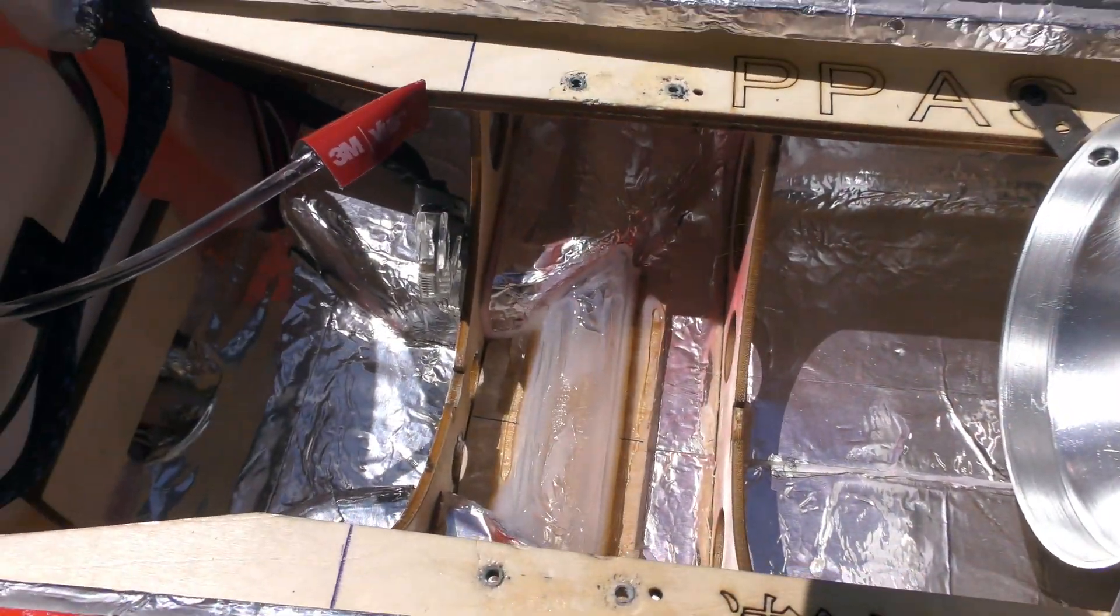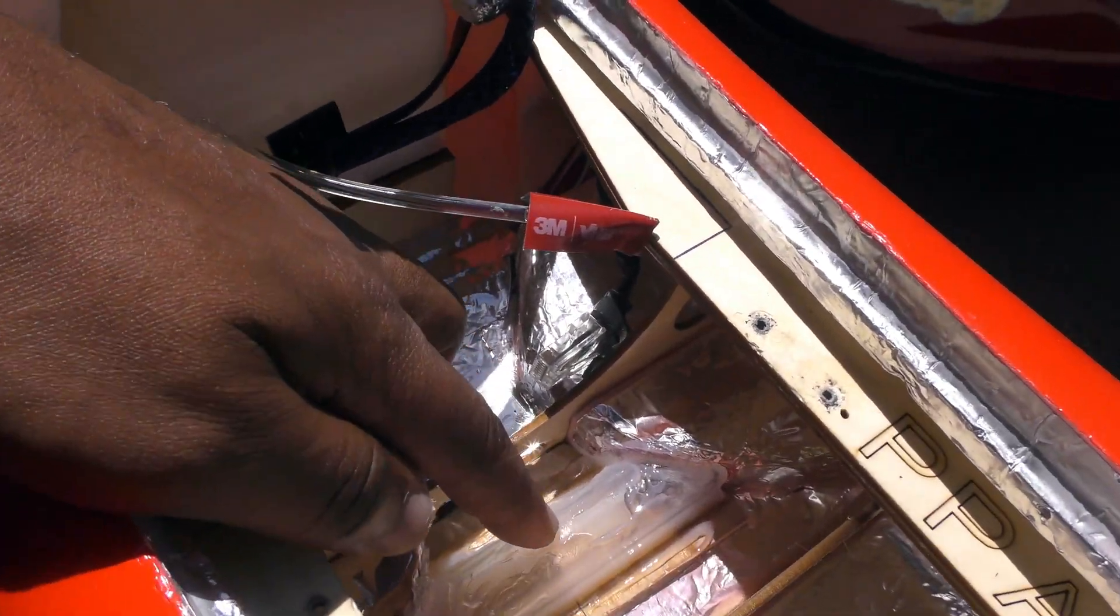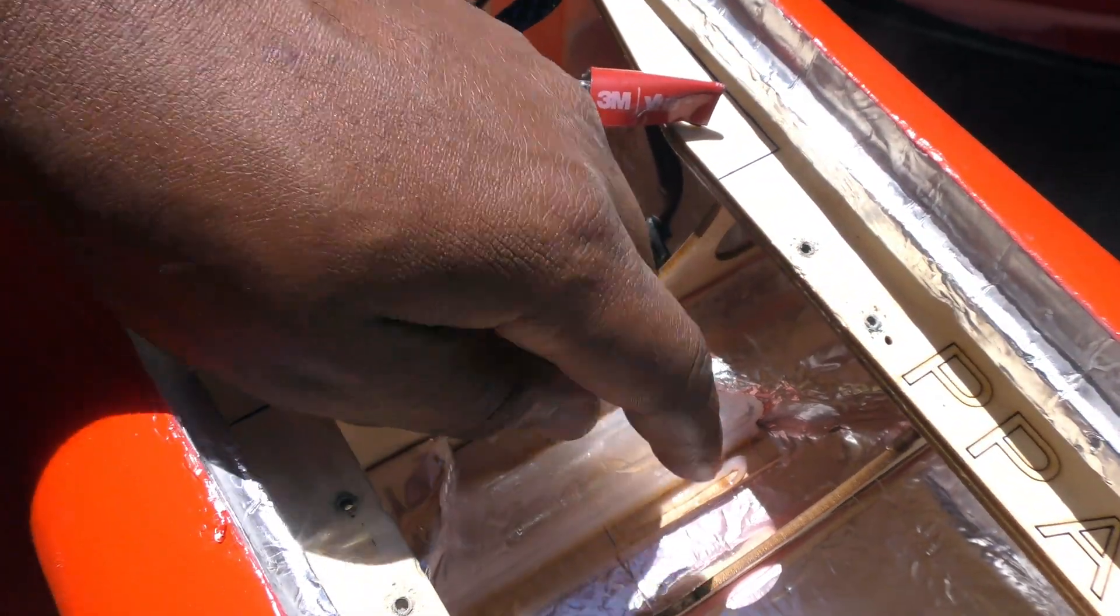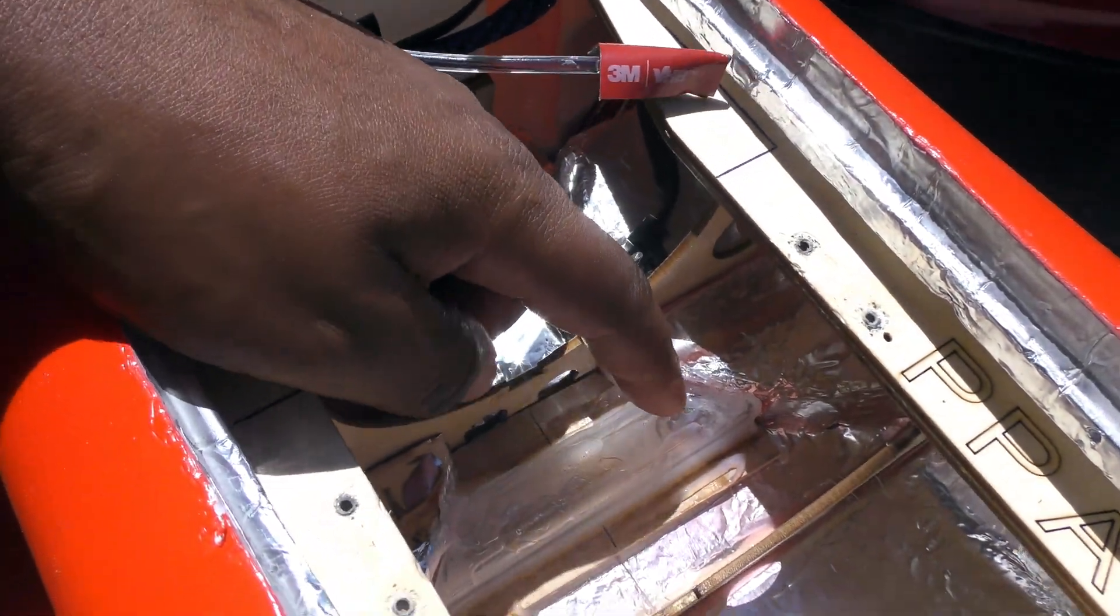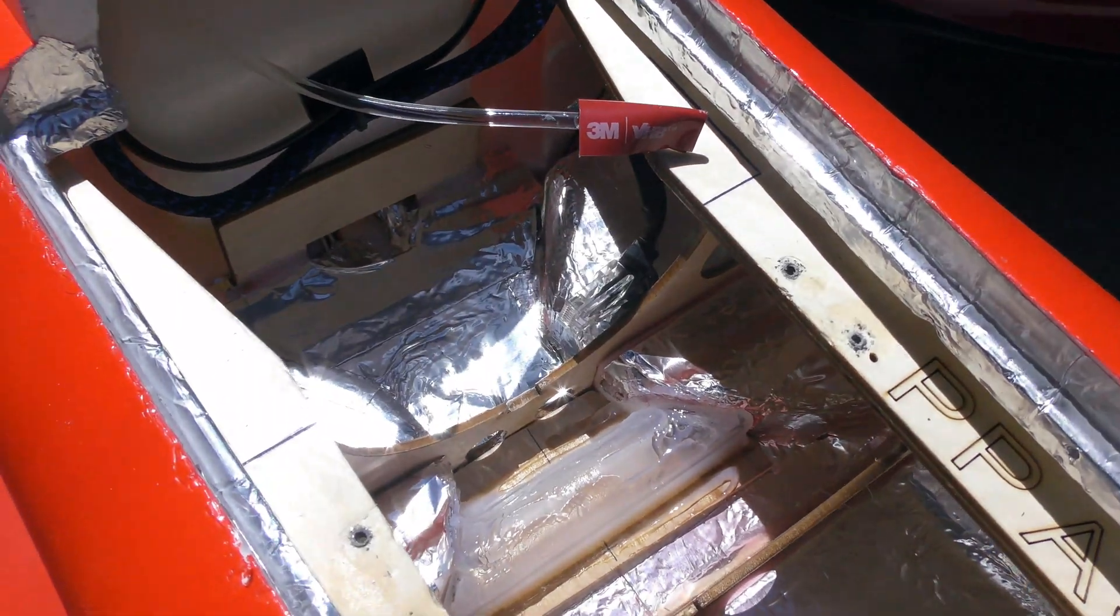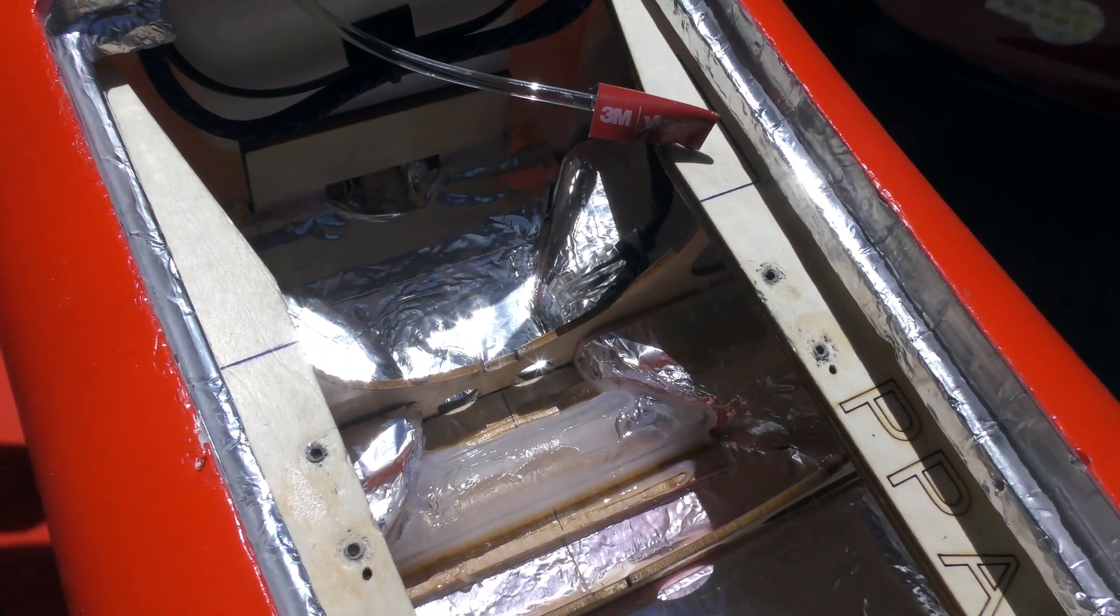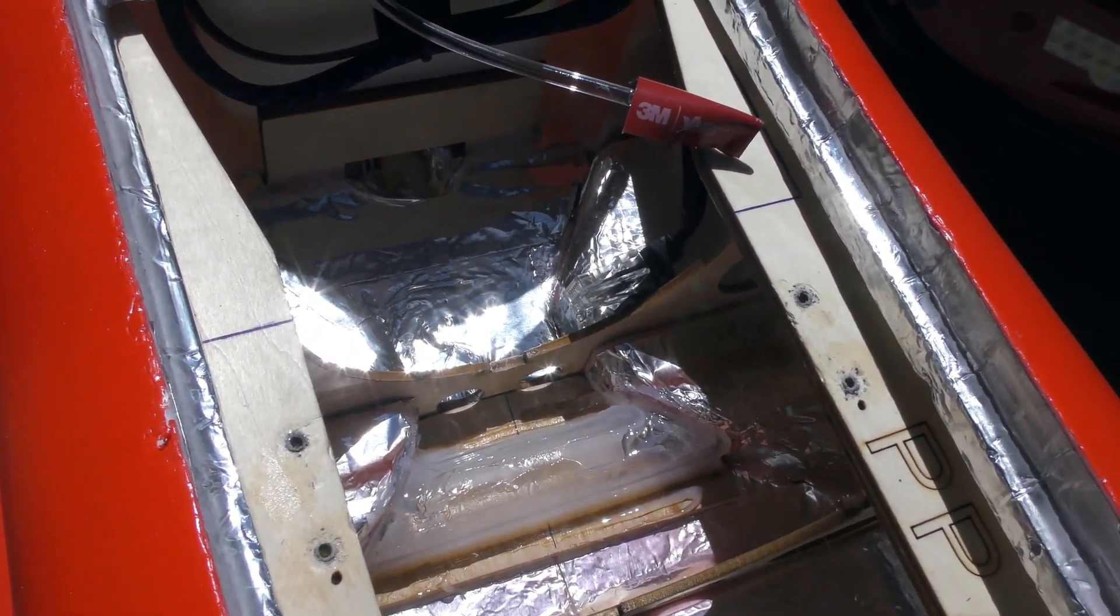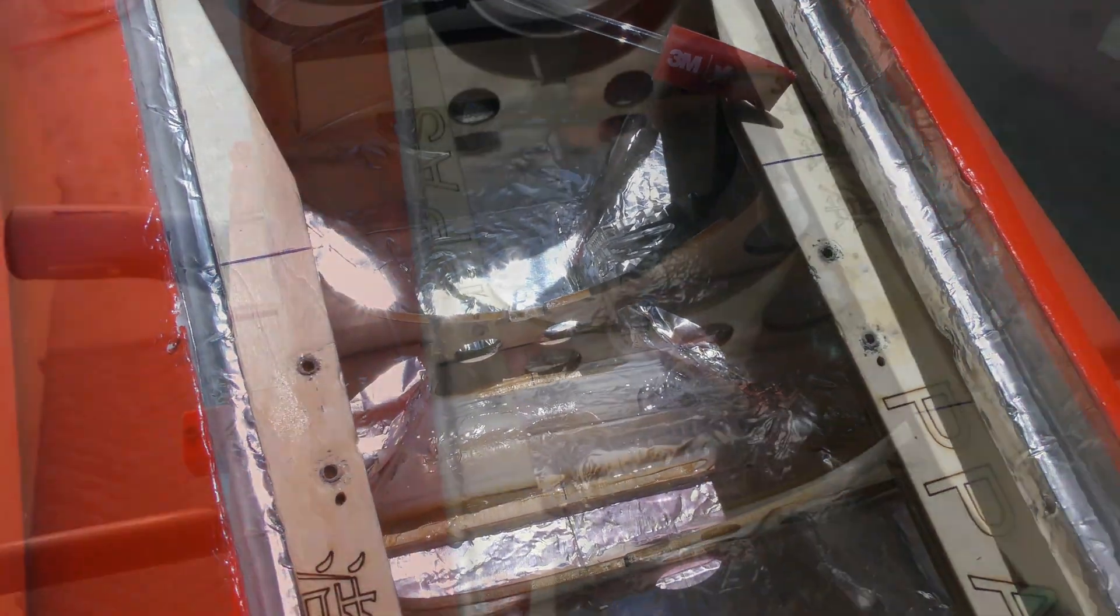Here's the final result. You can see that the extra spar is now glued to the bottom of the fuselage and to the sides here with E00NS AeroPoxy. Hopefully with that, I'm a little bit happier with this. I just like to overbuild the supports for the wing.